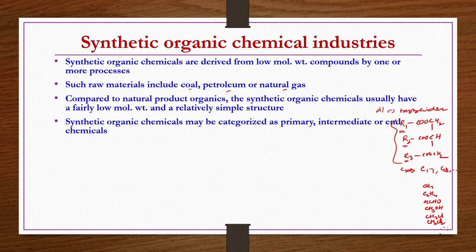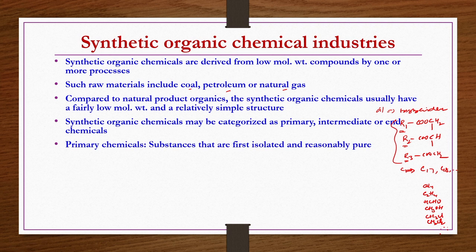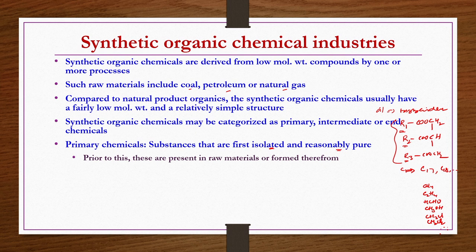Synthetic organic chemicals may be categorized as primary, intermediate, or end chemicals. Primary chemicals are substances that are first isolated in reasonably pure form — simply isolated from their sources or obtained from basic raw materials. They may already be present in the raw materials as-is, or formed from them.